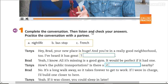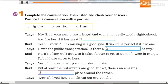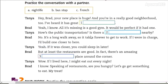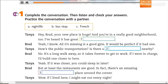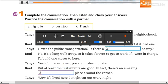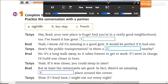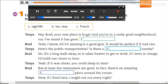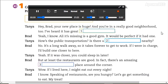He's Brad and she's Tania, so you're going to listen to the conversation and complete with these options: nightlife, bus stop, French. Listen and complete. Complete the conversation, then listen and check your answers. Practice the conversation with a partner.